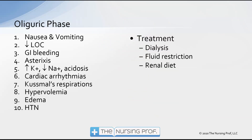Renal failure will first enter the oliguric phase, characterized by decreased urine output. But there are many other symptoms beyond just that. Nausea and vomiting occur because electrolytes are building up in ways they shouldn't. Decreased level of consciousness is related to a decrease in sodium level. GI bleeding may also occur. Asterixis — also called liver flap — develops as proteins build up in the blood, causing neuromuscular irritability. To assess, have the patient hold their arm out straight and pull the fingers back palm-up; the hand will flap. We're building up ammonia and other results of protein metabolism that aren't being filtered out.